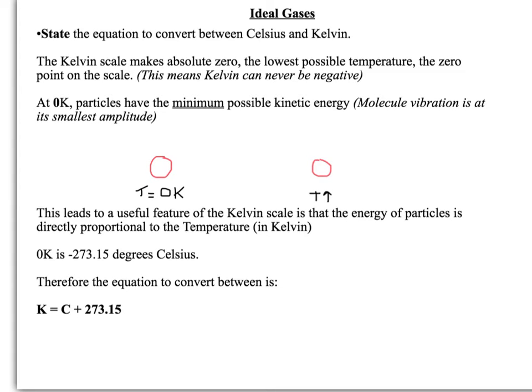We're going to start using the Kelvin scale when dealing with ideal gases. The Kelvin scale makes the lowest possible temperature in the entire universe zero, so there can be no negative Kelvins. Zero K is that minimum temperature.